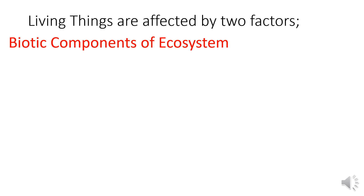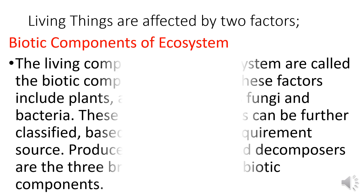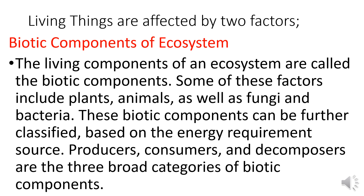There are two main components of an ecosystem which are in constant communication with each other: the biotic components and the abiotic components. The biotic components of an ecosystem are the living organisms or the living components. Some of these factors include plants, animals, fungi, and bacteria.